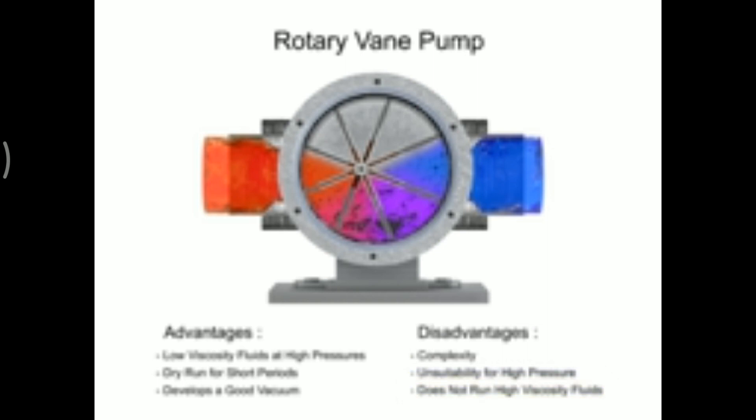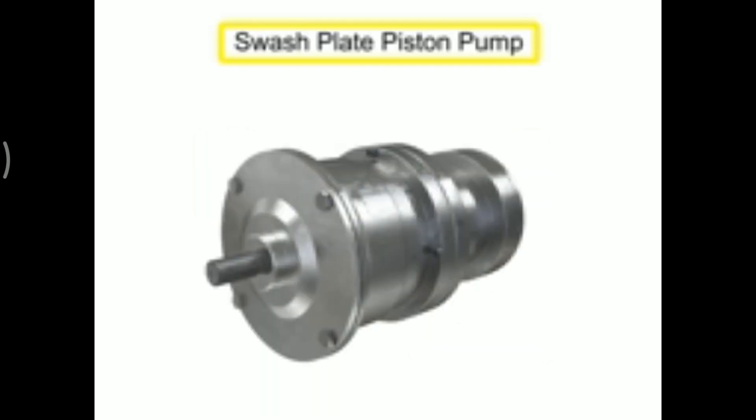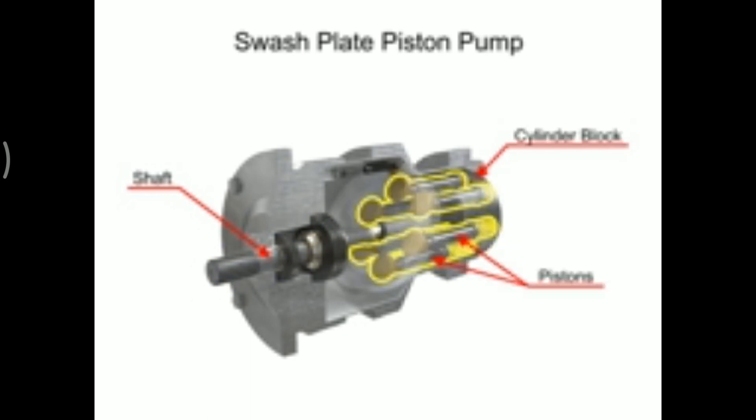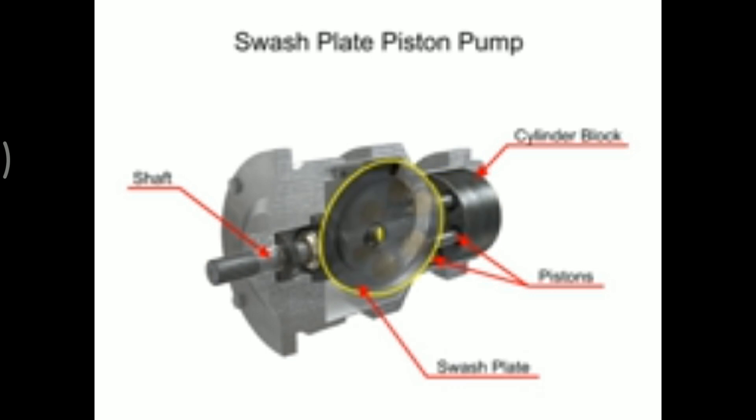Piston pumps come in many different forms. A swash plate is a device used to translate the motion of a rotating shaft into the reciprocating motion of a piston. Swash plate piston pumps have a rotating shaft connected to a cylinder block containing pistons, which are pressed against a stationary swash plate that sits at an angle to the cylinder.